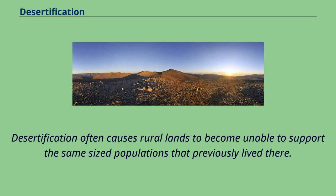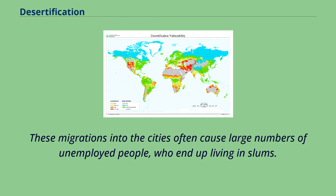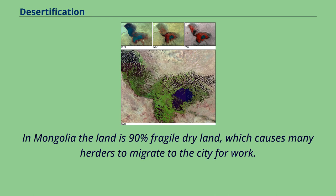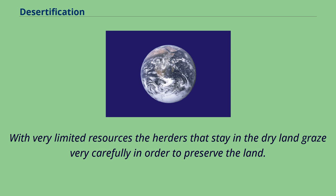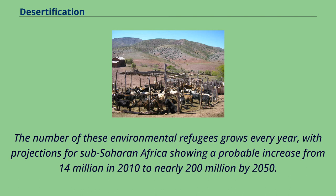Desertification often causes rural lands to become unable to support the same-sized populations that previously lived there, resulting in mass migrations out of rural areas and into urban areas, particularly in Africa. These migrations often cause large numbers of unemployed people who end up living in slums. In Mongolia, where the land is 90% fragile dryland, many herders migrate to the city for work. With very limited resources, herders that stay graze very carefully to preserve the land, but with the increasing population it is very difficult to remain a herder for long. The number of environmental refugees grows every year, with projections for sub-Saharan Africa showing a probable increase from 14 million in 2010 to nearly 200 million by 2050.